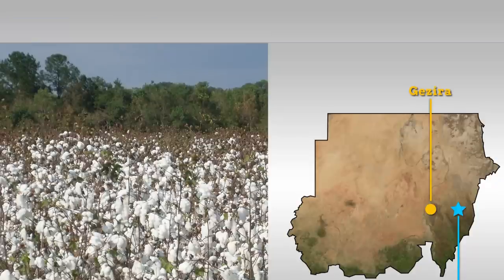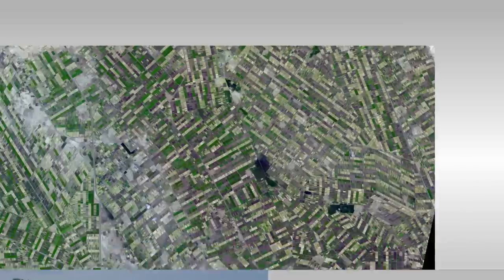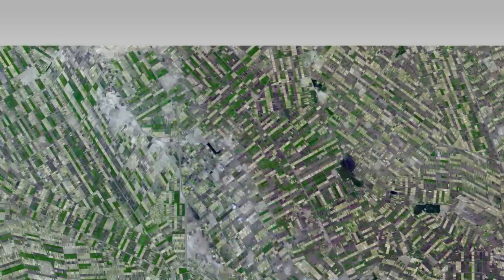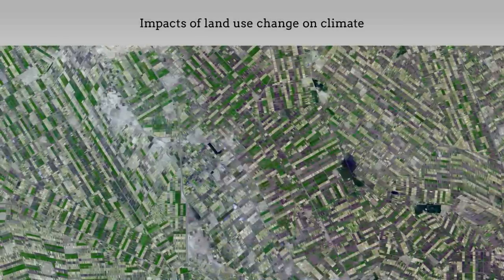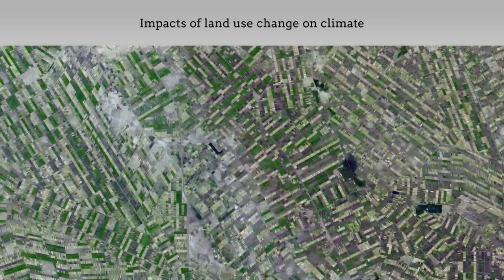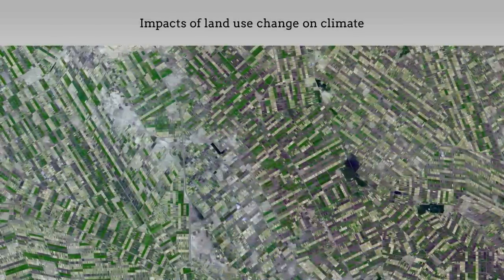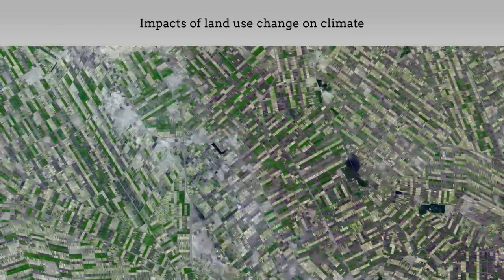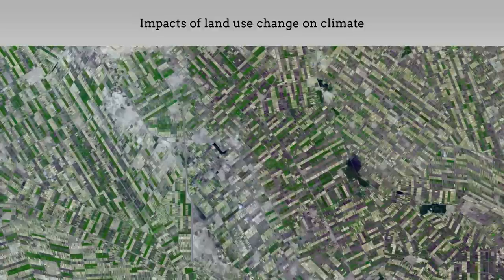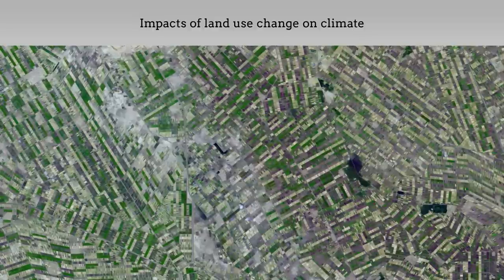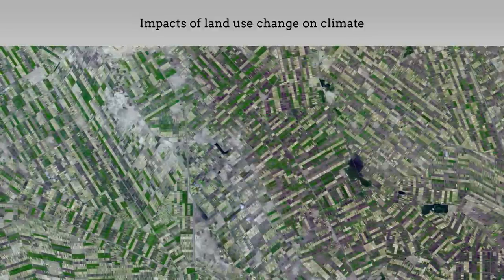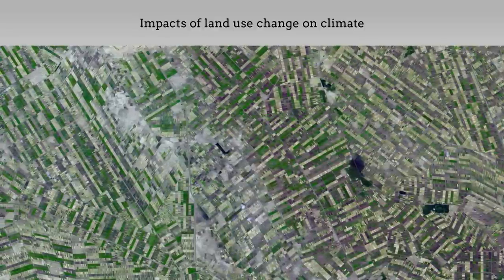These results strengthen our understanding of the impacts of land-use change on climate at regional scales, and suggest that far-ranging effects must be considered for the planning of large-scale irrigation in semi-arid regions.